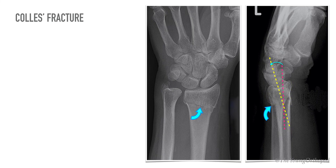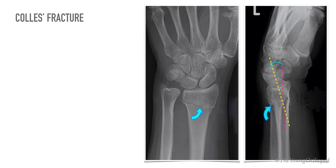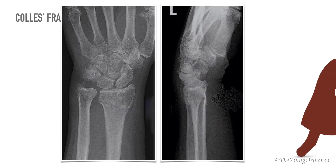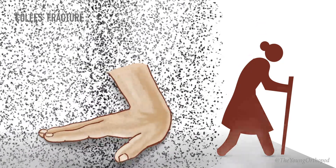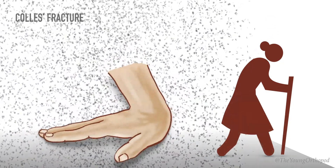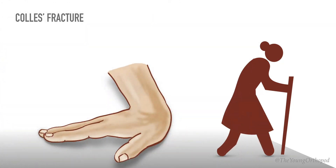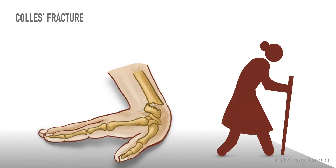Colles' fracture is the most common of all fractures in older people. The patient is usually an older woman who gives a history of falling on her outstretched hand, the high incidence being related to the onset of postmenopausal osteoporosis.